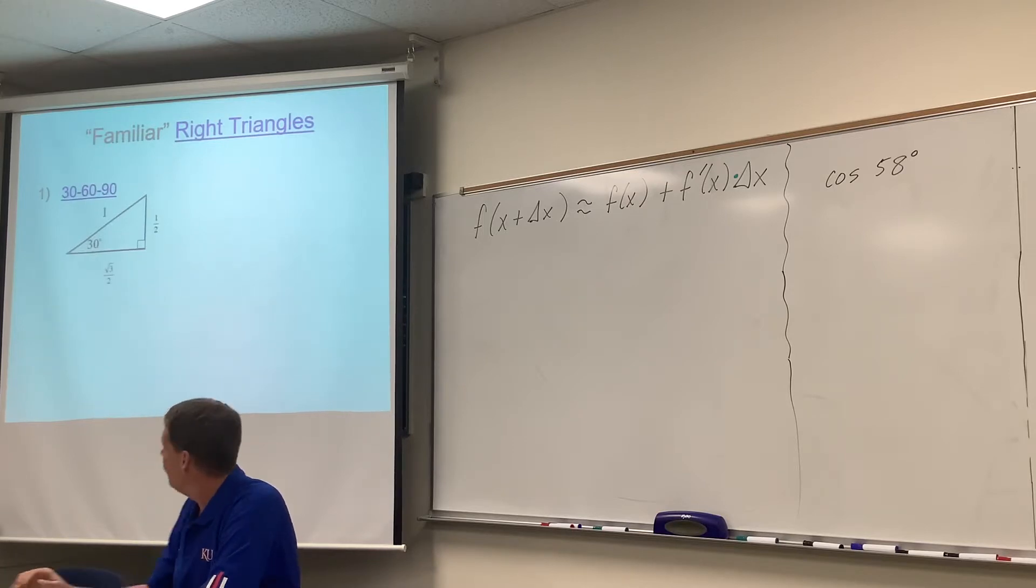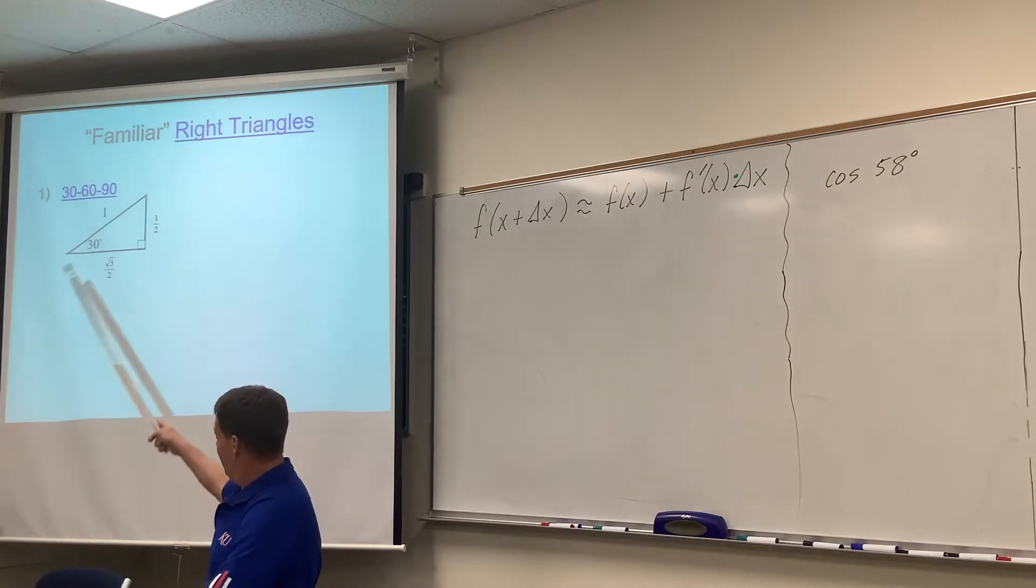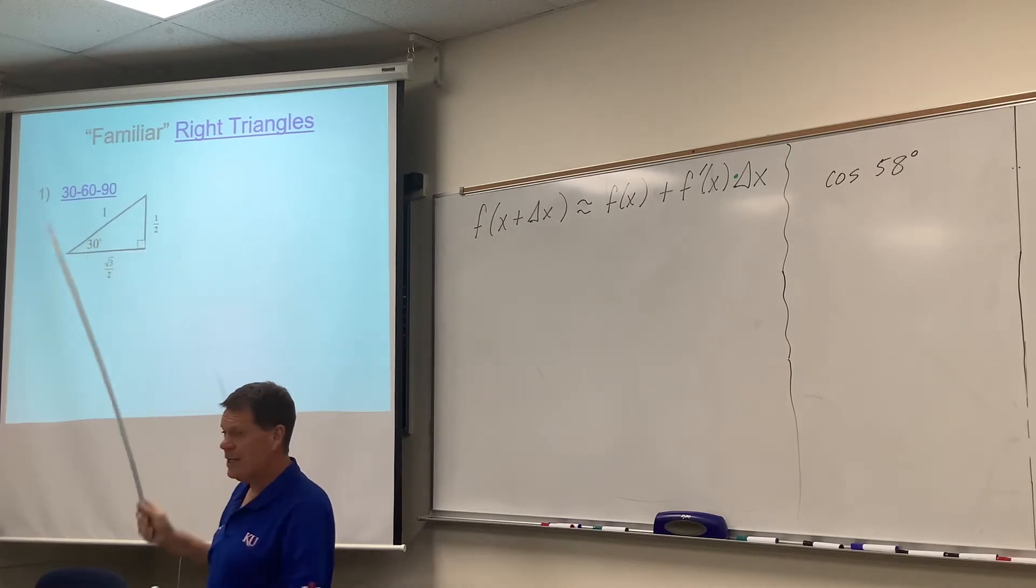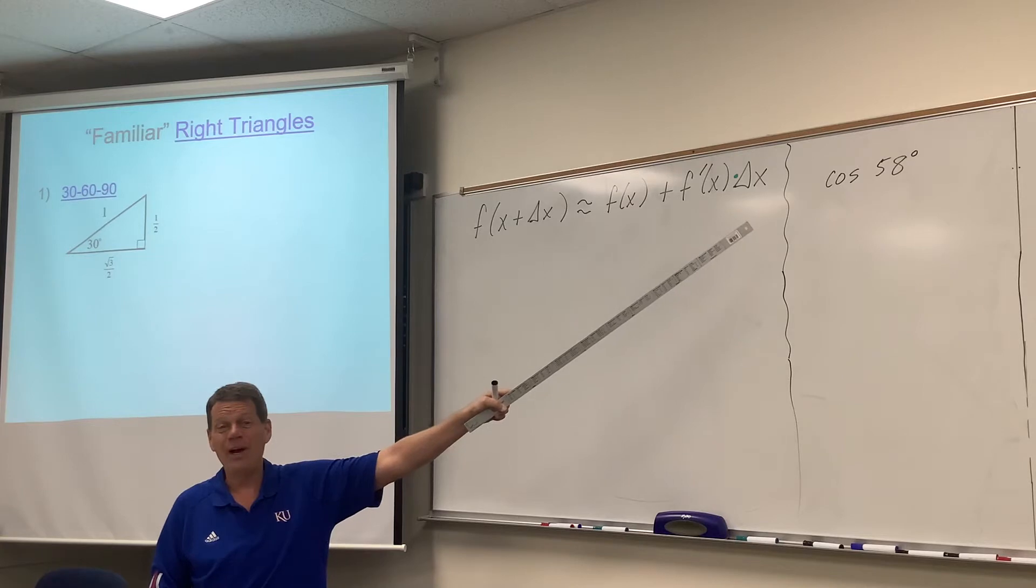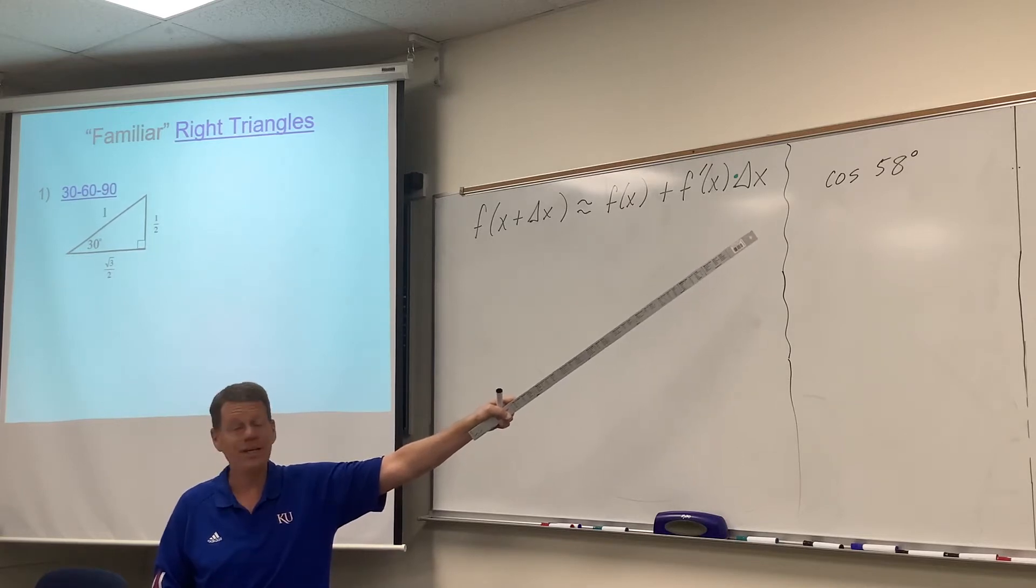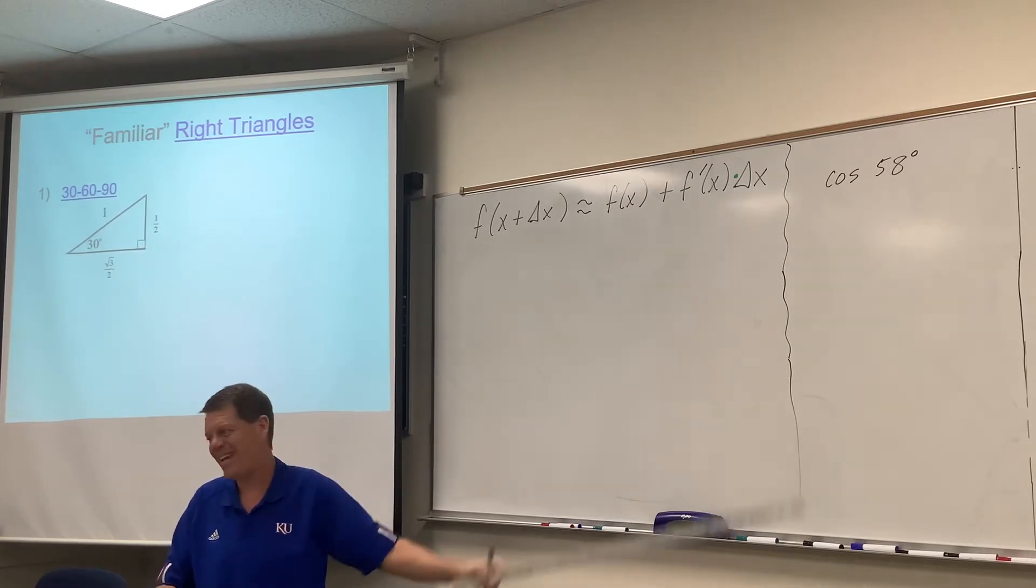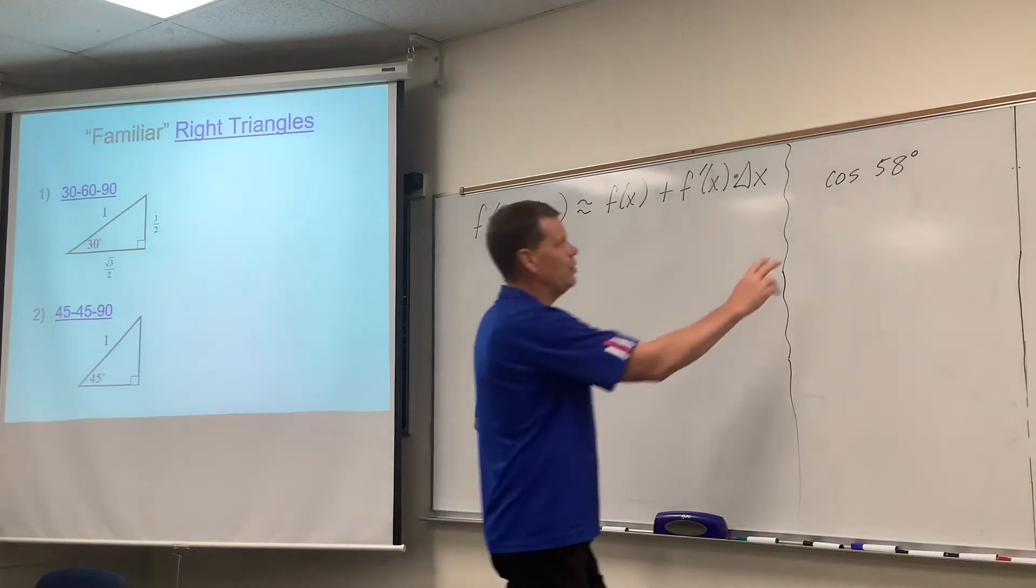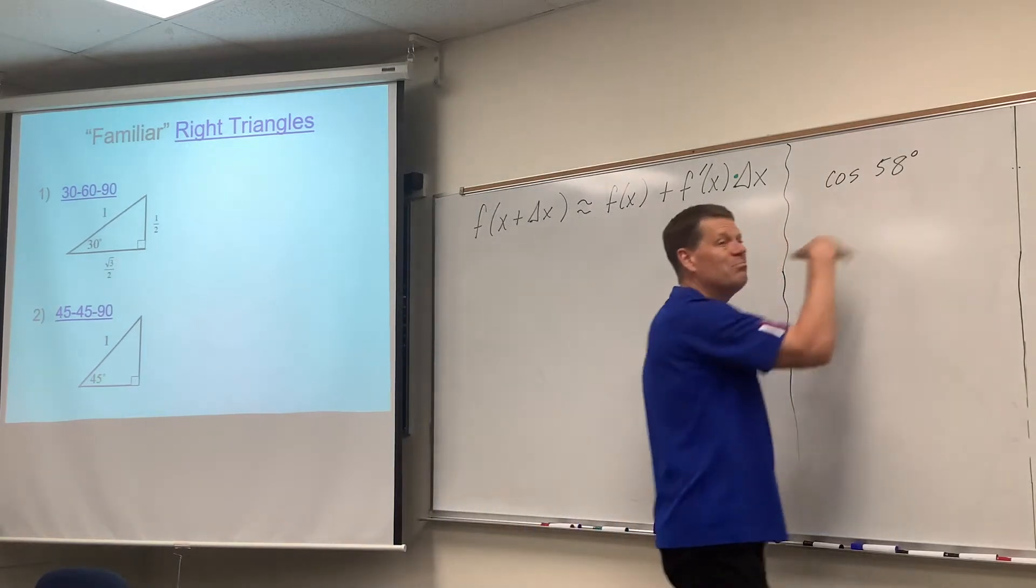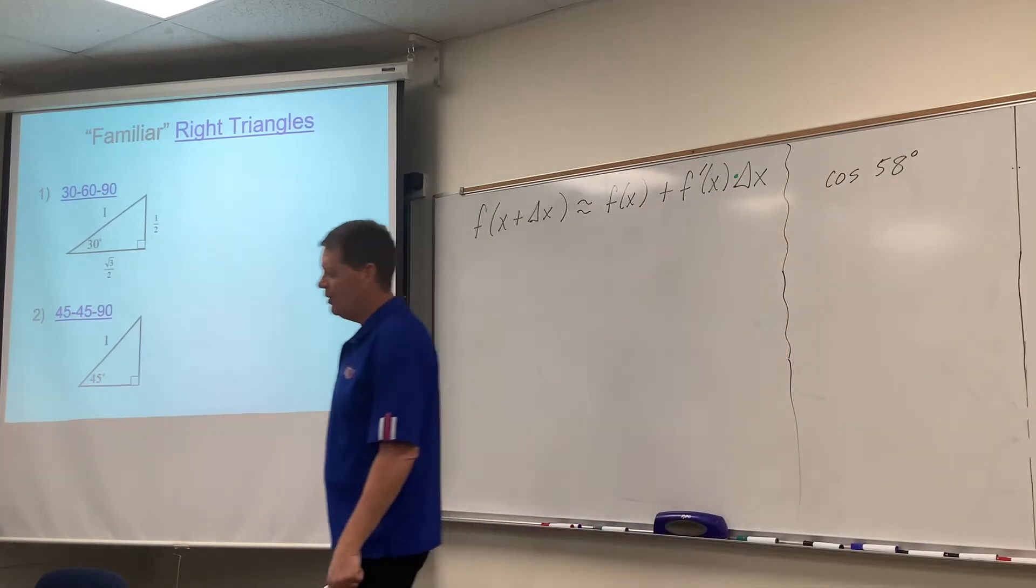Now we could go back to our familiar triangles. We could make x 30 degrees, but then that would be 28 degrees away. We could call 58 degrees 30 degrees plus 28 degrees. But we could also do 45 degrees plus 13 degrees. That's a smaller delta x.